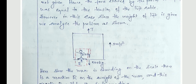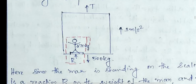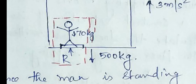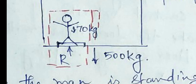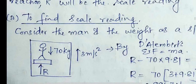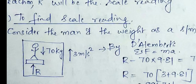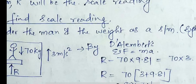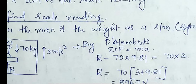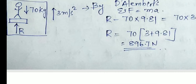To solve these problems it is very simple. Suppose we need to find out the scale reading — that means the man's scale reading. We consider only the man as a system, not the lift. For finding the scale reading, we consider only a man of mass 70 kilogram, the reactive force R, and he is moving upwards with an acceleration of 3 meter per second square. So we can apply D'Alembert's principle here. The forces in the direction of motion are positive, so R minus 70 into 9.81 equals 70 into 3. We get R equal to 896.7 Newton. This R value is the scale reading.